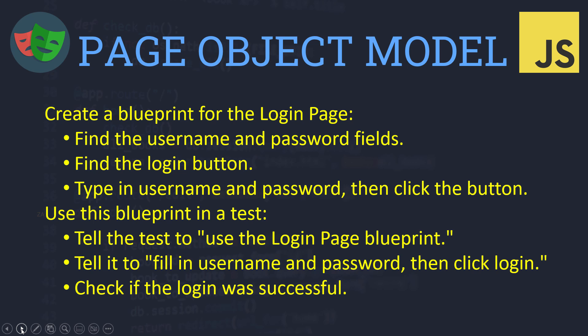You can then use these blueprints to build your test cases, like assembling the blocks together. For example, you will create a blueprint for the login page — this blueprint will find the username and password fields, find the login button, type in the username and password, and then click the button. You will use this blueprint in your test to fill the credentials, click login, and check whether you are successfully logged in.